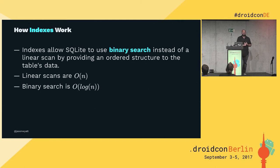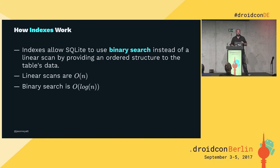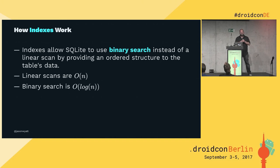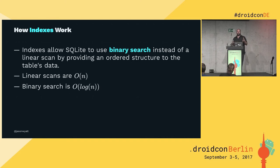Indexes let us avoid doing linear scans and instead provide a separate ordering of the data where, because it's ordered, SQLite can use binary search. Binary search has order log N performance, compared to a linear scan at order N. So let's create an index called band_loc_name on the bands table using the location and the name. The index stores the location, name, and bands in sorted order along with the primary key. Once we've found what we're looking for, we have the primary key and can then go to the table itself for any extra information the query needs. After creating the index, EXPLAIN QUERY PLAN shows it's going to use 'SEARCH TABLE bands USING INDEX band_loc_name' instead of a scan.